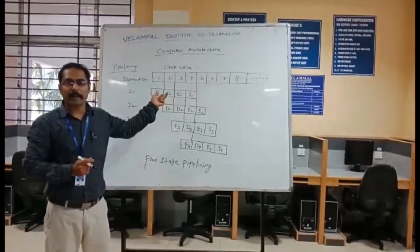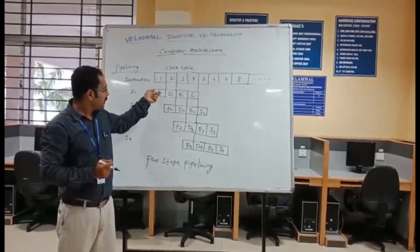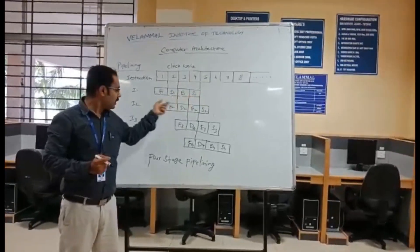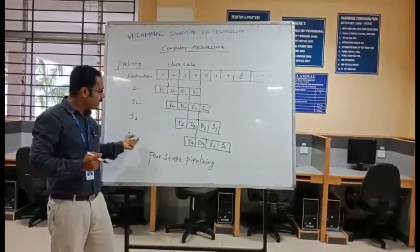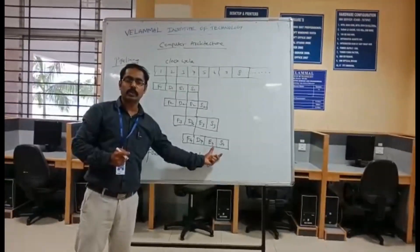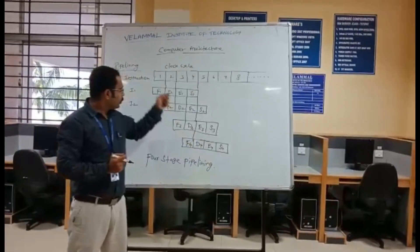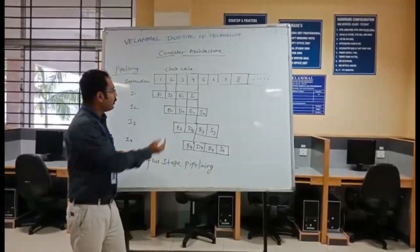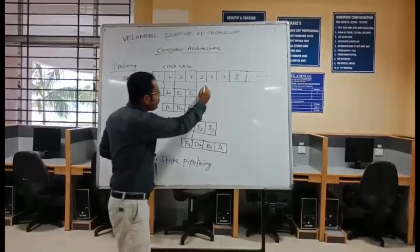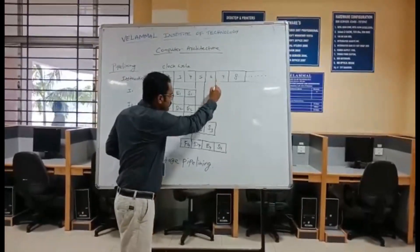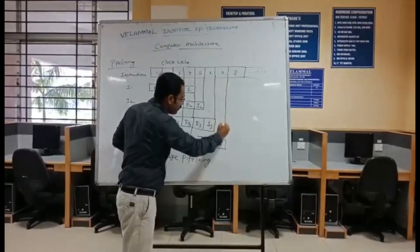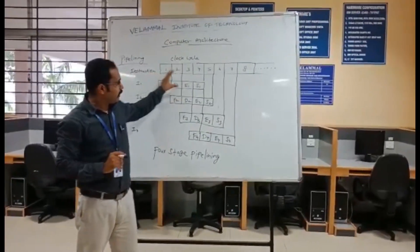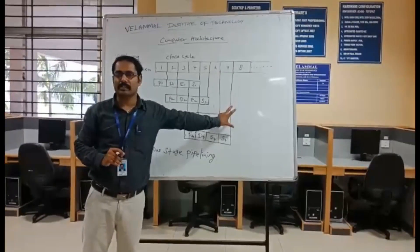Suppose we are not using a pipelining concept, but when you use a pipelining concept it reduces the overall processing time. How many clock cycles is it taking now? Only 7 clock cycles — that is, 5, 6, 7. When you use a pipelining concept, it is taking only 7 clock cycles.